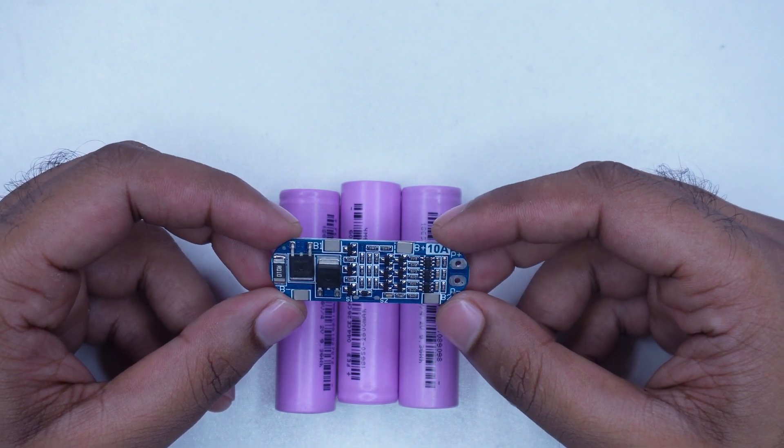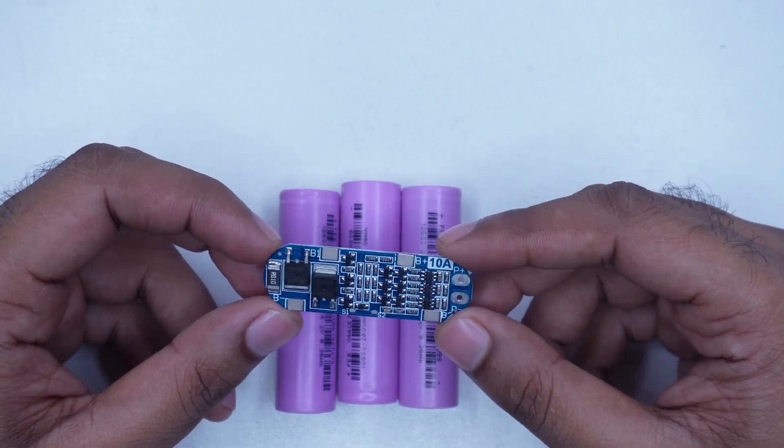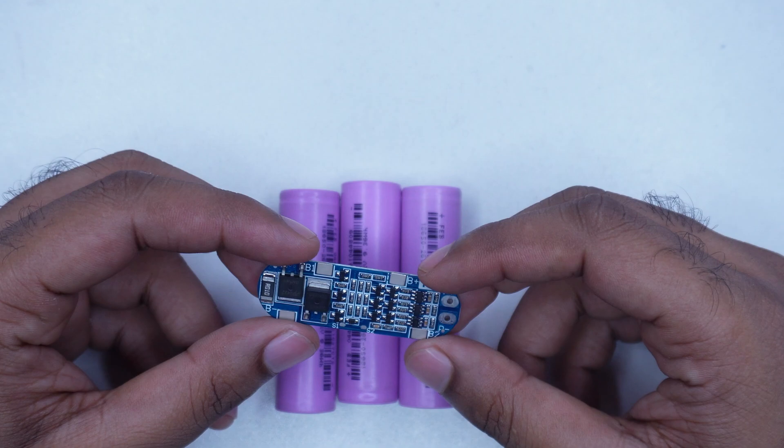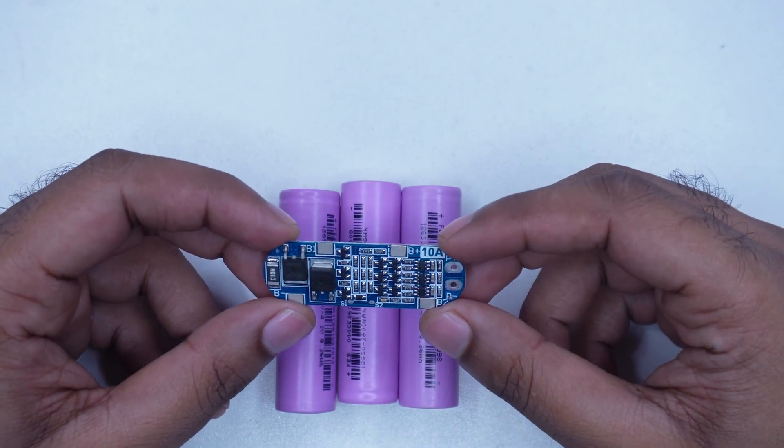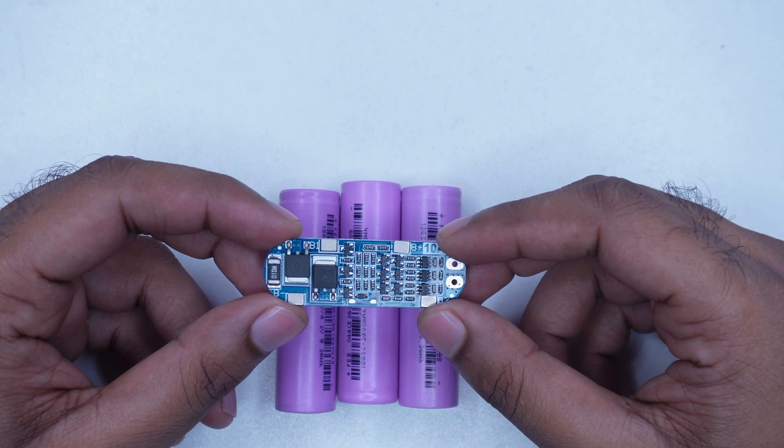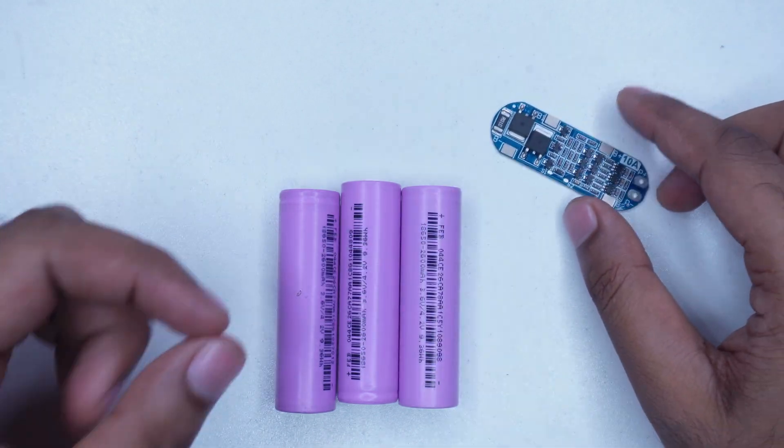This circuit you can see in my hand is called a BMS circuit. With this circuit, large battery packs can be made using small 3.7 volt lithium batteries. As an example today, we will build a 12 volt battery pack using three lithium batteries.